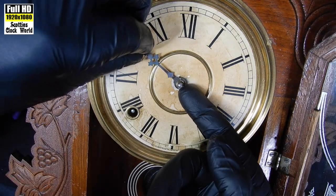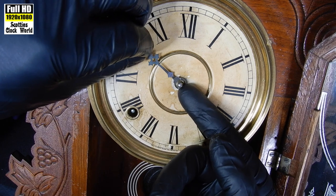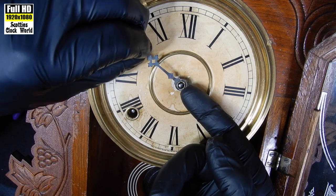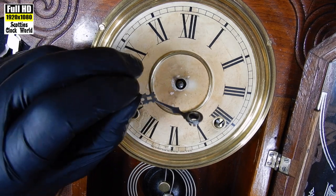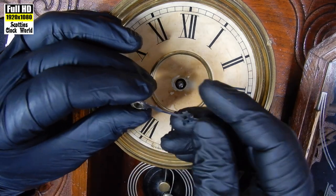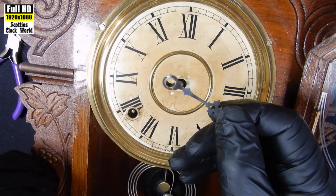Now we remove the hour hand by putting a fingernail underneath it and lifting it up. The hour hand is kept on by friction, so it's very easy to remove. We'll put that aside.